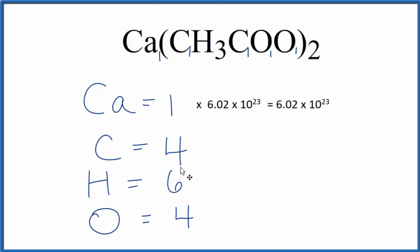For the carbon, we have 4 atoms, so we'll multiply 4 times Avogadro's number, and that gives us the number of atoms for the carbon. Likewise, for the hydrogen, we'd multiply 6 times Avogadro's number. For the oxygen, 4 times Avogadro's number.